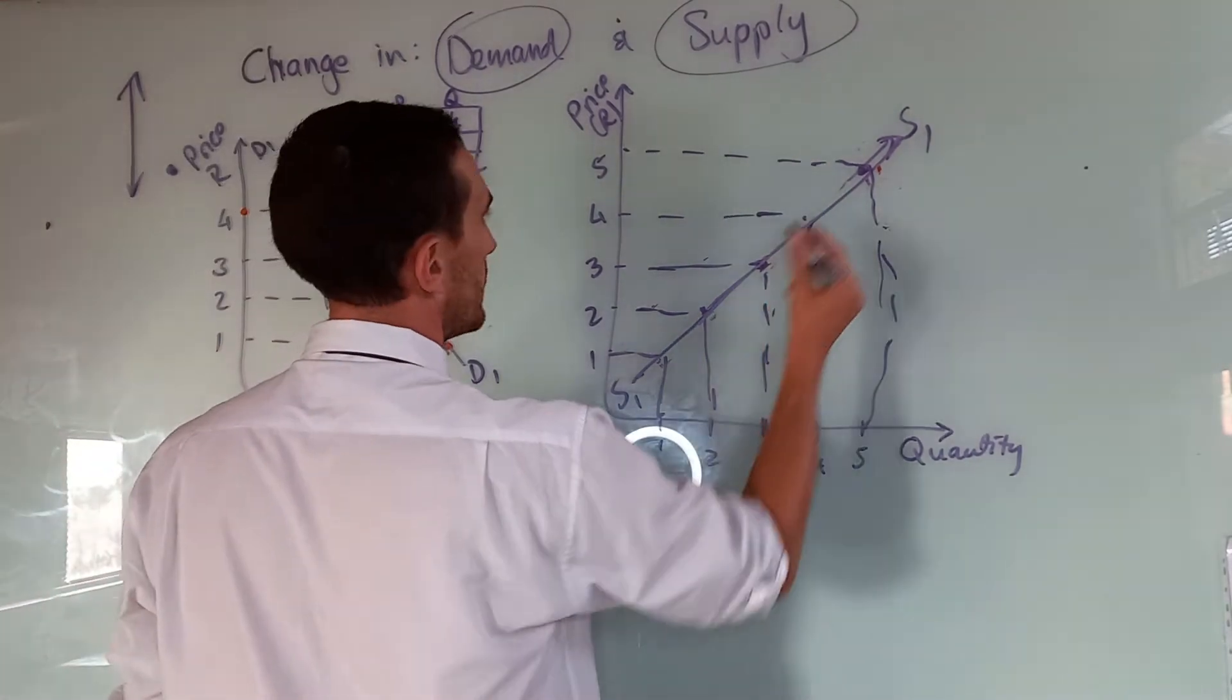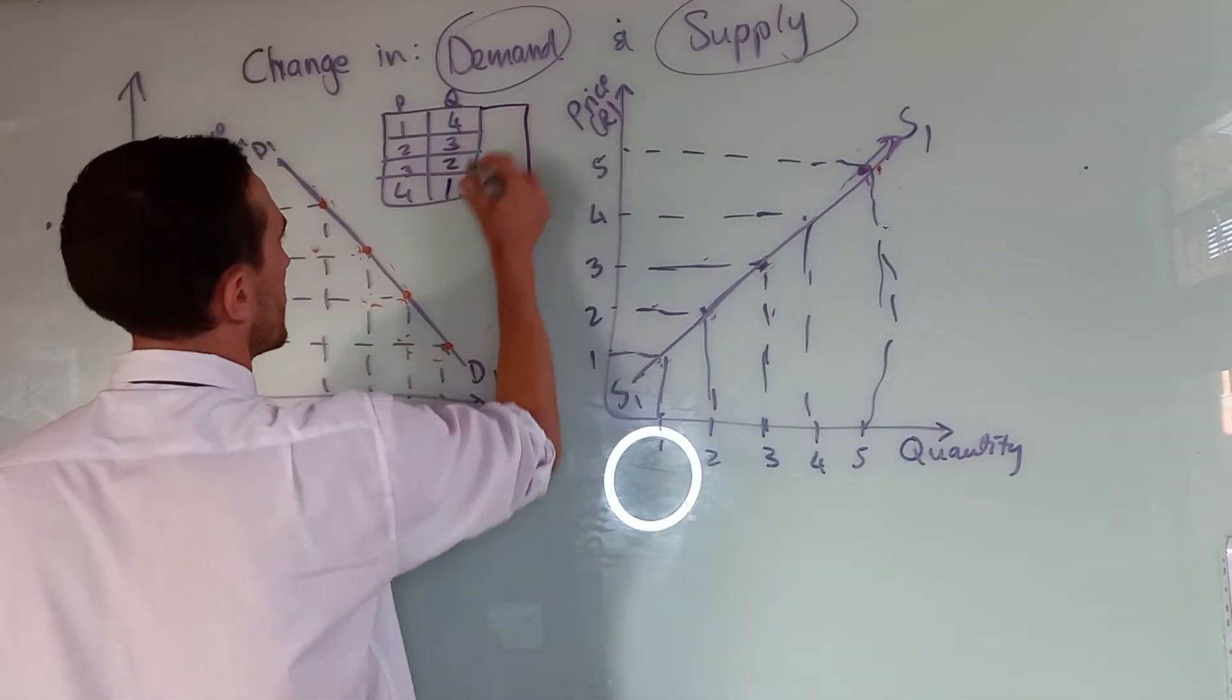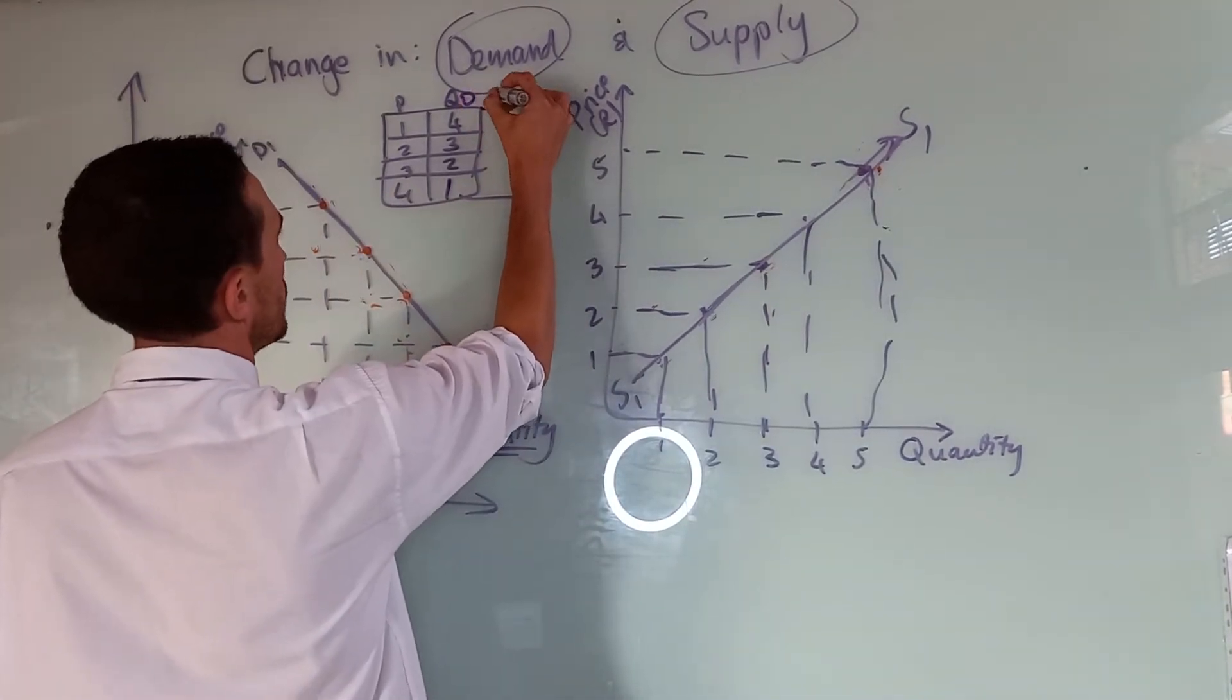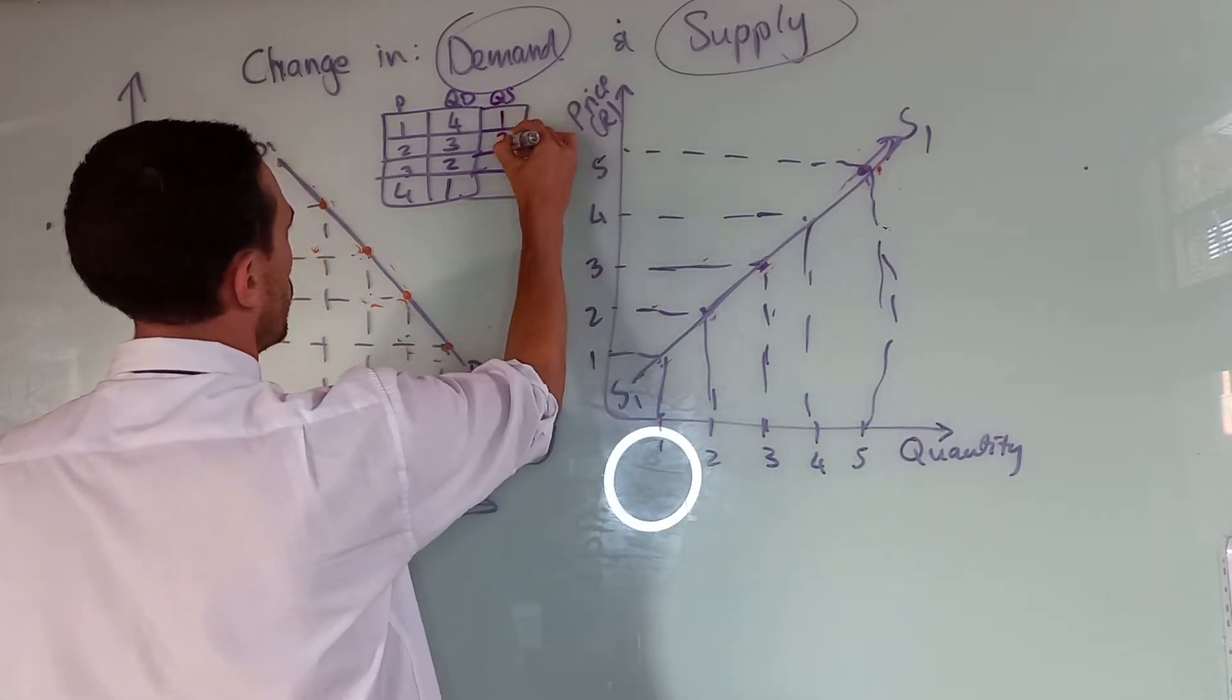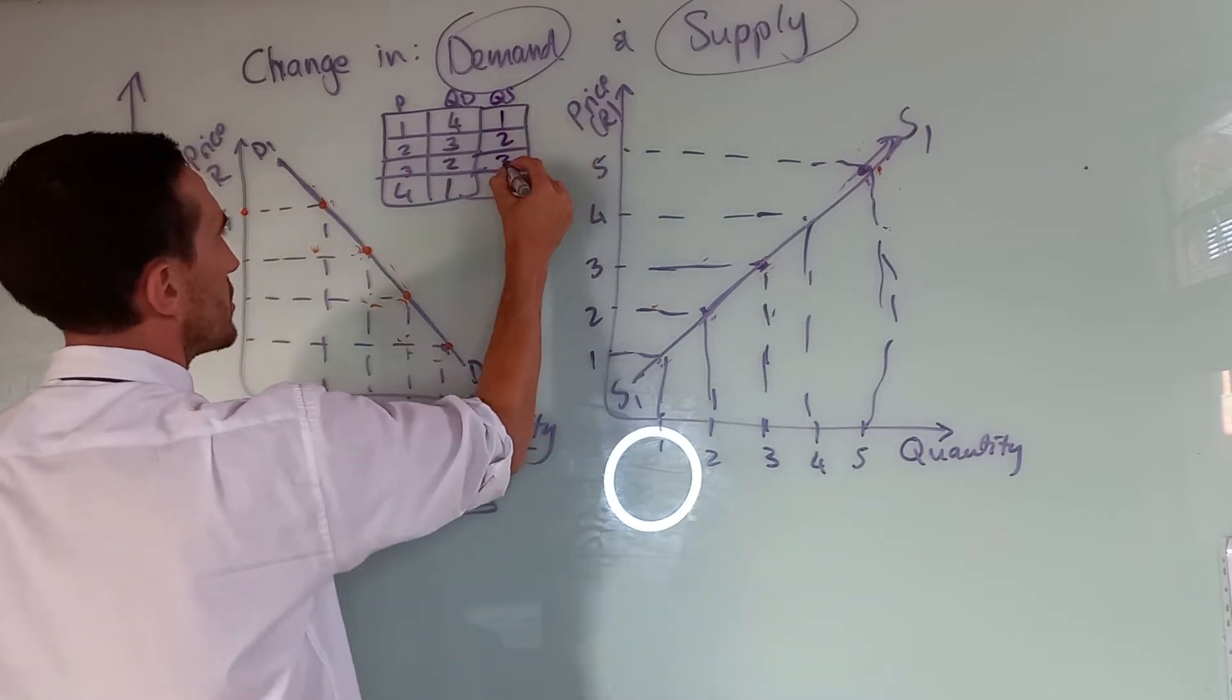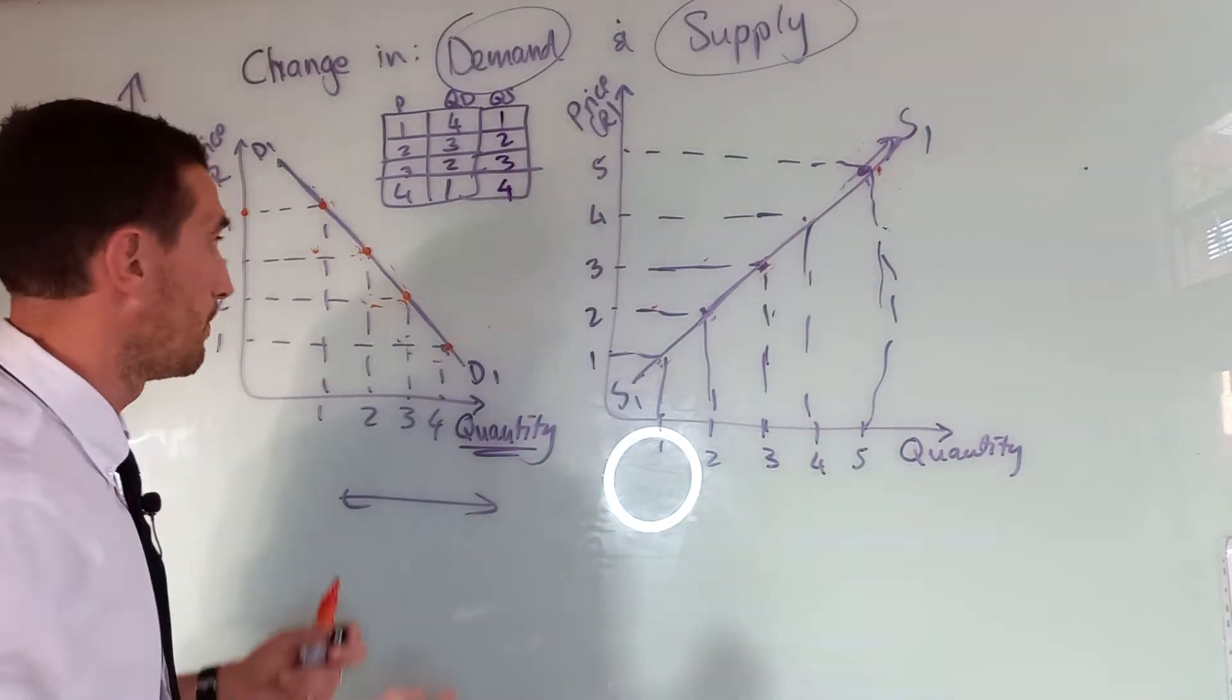For supply, it looks a bit different, and therefore there's always a change. It's actually the opposite. For one, it's one. For two, it's a direct relationship, like we said in the previous video.